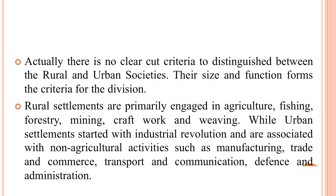With the discovery of the comforts of food sufficiency through agriculture, the convenience of mobility with the discovery of the wheel, and the security of living in a group, primitive humans began to feel the need for a settled life and made shelters for themselves. There was no clear-cut criteria to distinguish between rural and urban societies. Their size and function form the criteria for the division. Rural settlements are primarily engaged in agriculture, fishing, forestry, mining, craft work and weaving.